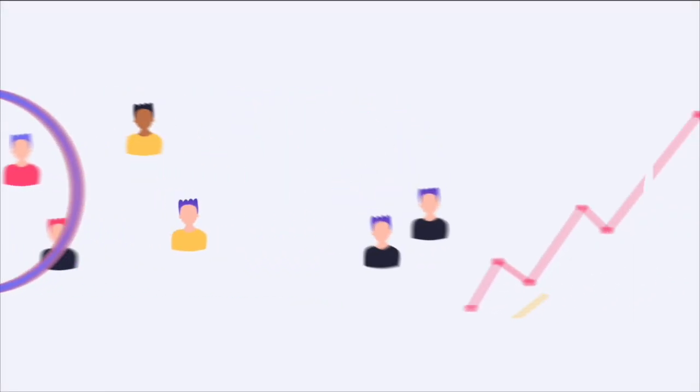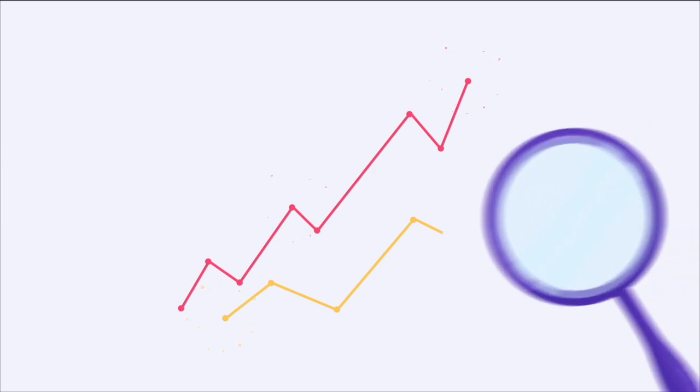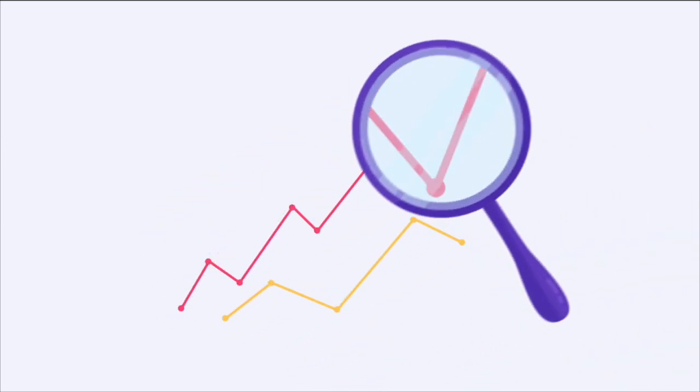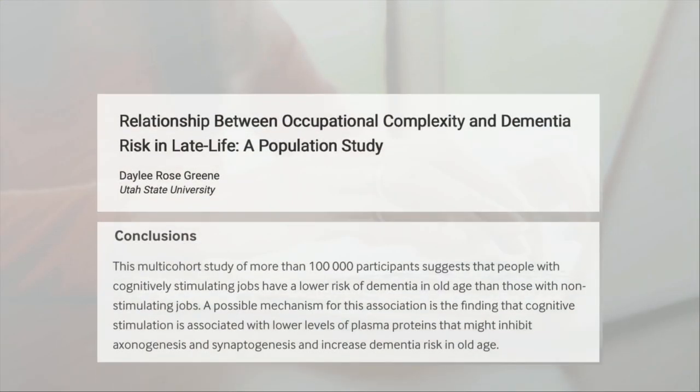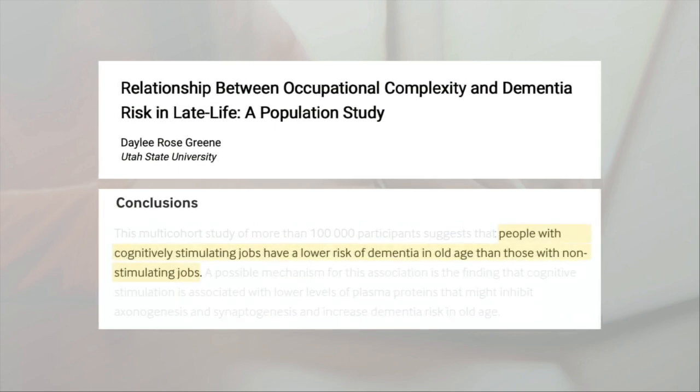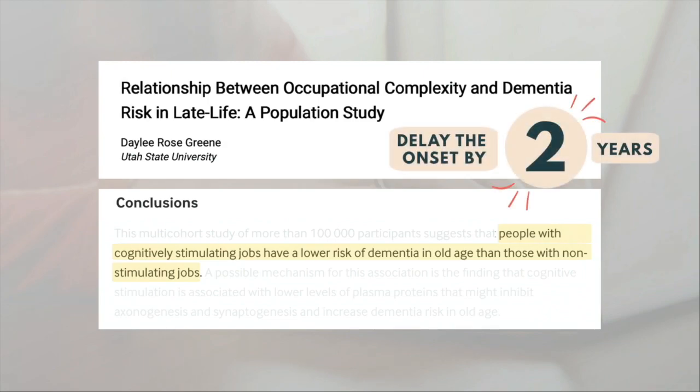In this short video I will tell you how your job could reduce your risk of developing Alzheimer's disease. Research shows that people with cognitively stimulating jobs tend to stay mentally sharper, which may delay the onset of Alzheimer's disease by about two years.